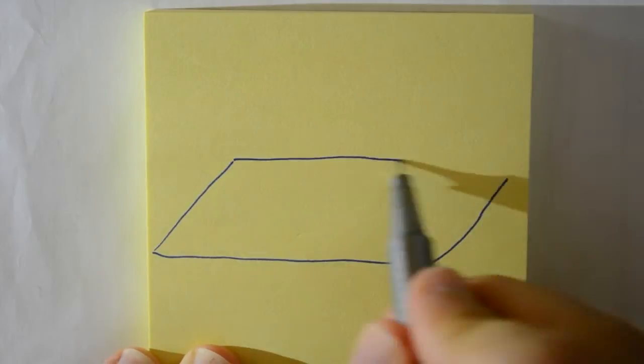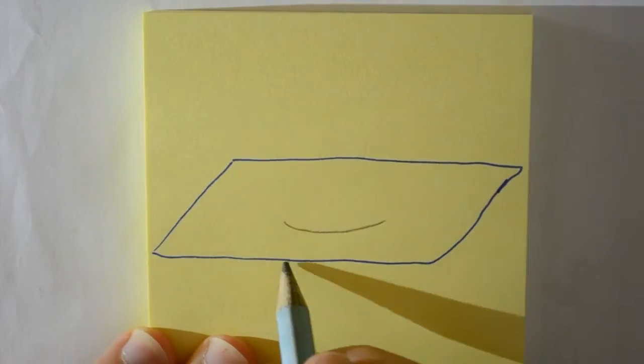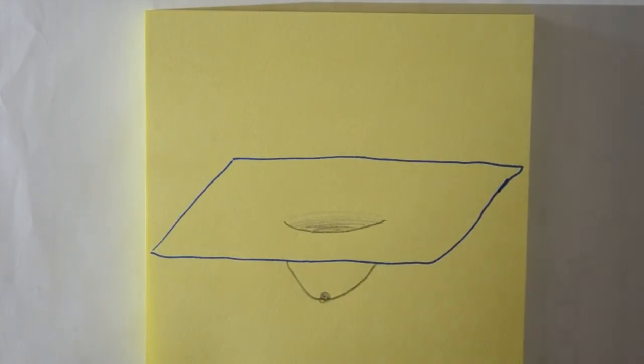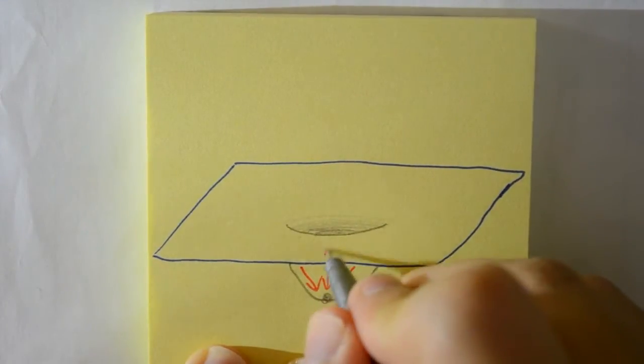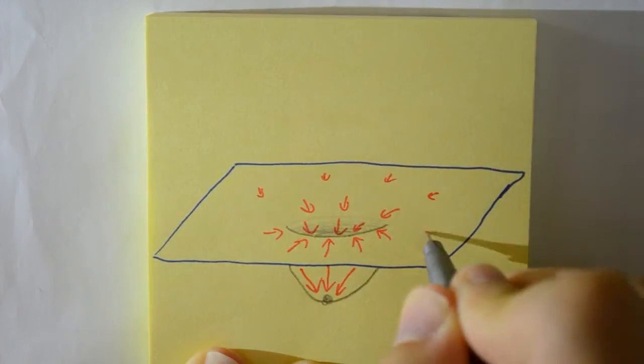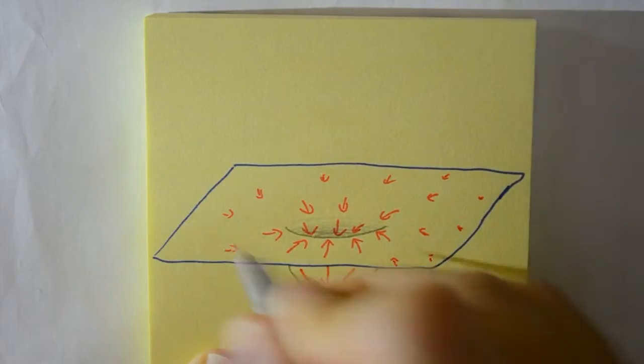However, Einstein found that gravity is a physical distortion of space-time. So if we draw our sheet as a representation of space-time, when we place, say, a star or a planet in it, it actually distorts and pulls down the space-time. And then we can draw our arrows back on afterwards.